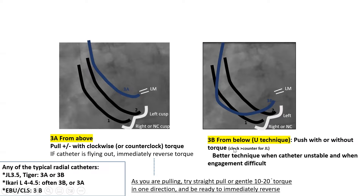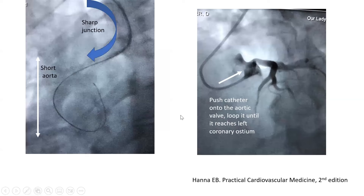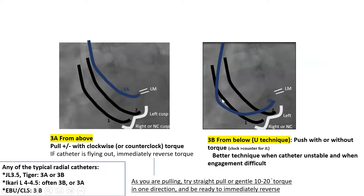Step 3B is engaging from below: you push the catheter from the left cusp upward until it engages. It may go straight in, or if it's coming out of plane, pull it back, give it a torque — clock or counter-clock — and push again. This technique is more useful in difficult engagement cases where the catheter has a propensity to fly out. Engaging from below provides more stable engagement, supported on the opposite aorta and the aortic valve. In difficult cases, I favor engaging from below; for EBU-CLS guiding catheters, it is the required technique.